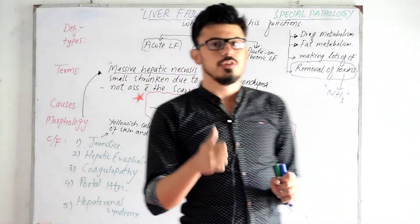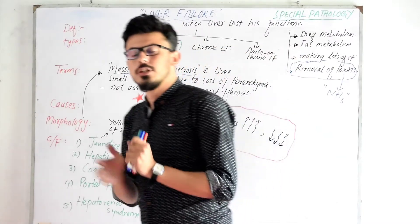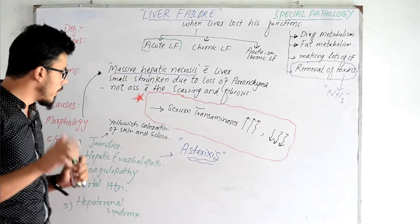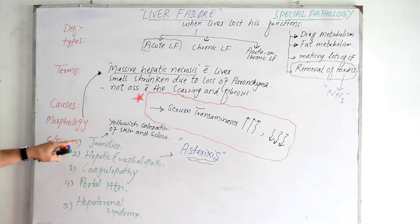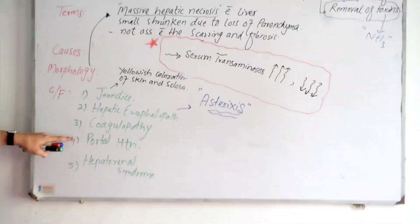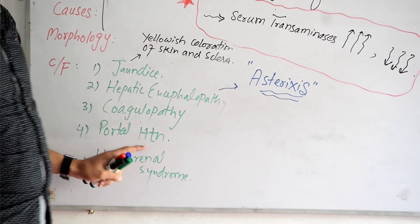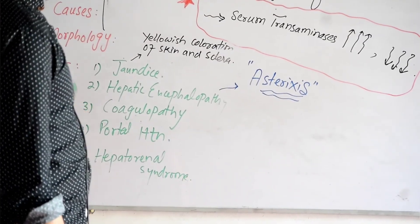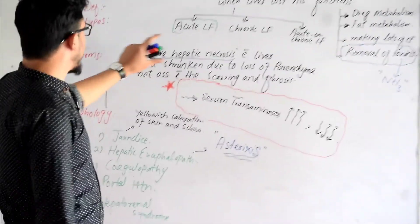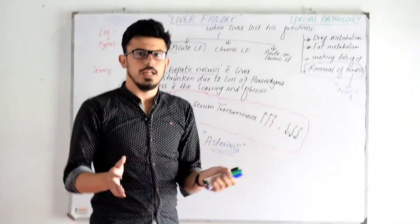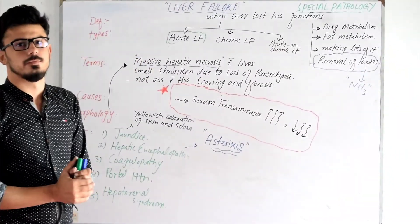The five key clinical features of acute liver failure that you should know are: jaundice, hepatic encephalopathy, coagulopathy, portal hypertension, and hepatorenal syndrome. That's all about the clinical features of acute liver failure. Thank you so much.